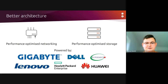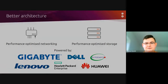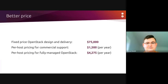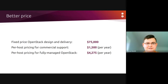We work with a bunch of hardware vendors, including Gigabyte, Dell, Supermicro, Lenovo, HPE, QCT, and others. Finally, the third pillar is better price. Charmed OpenStack design and delivery is available at a fixed price — always $75,000 for the base deployment. And we provide per-host pricing for both commercial support and fully managed OpenStack, so that the budget can be planned predictably. Per-host pricing is more predictable compared to what VMware does with their per-vCPU pricing, for example.